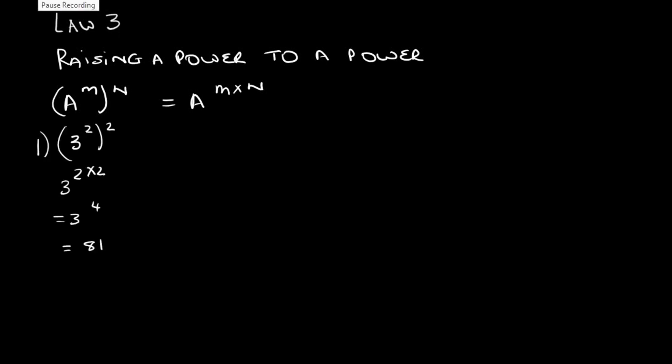In other words, if I have 3 to the power 2 to the power 2, I would need to write that out as 3 to the power 2 times 2, which is 3 to the power 4. And we know that 3 to the power 4 is 81.